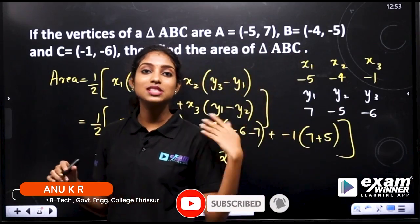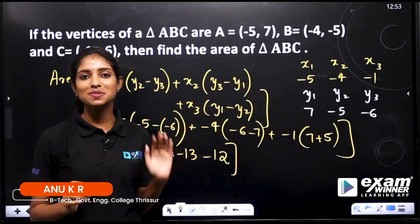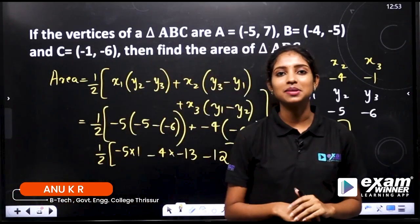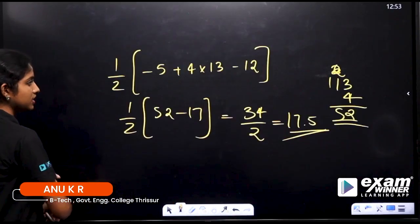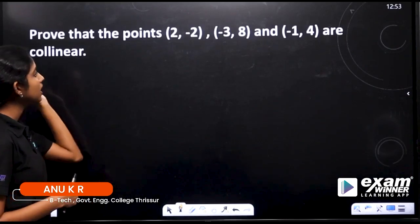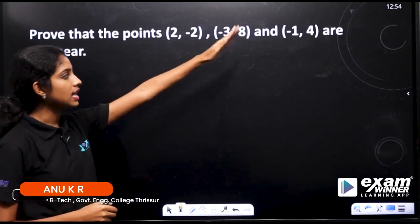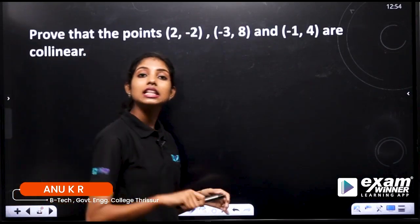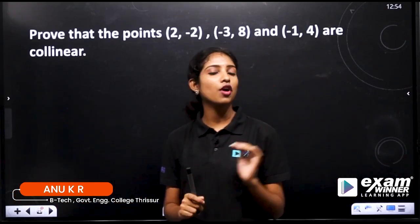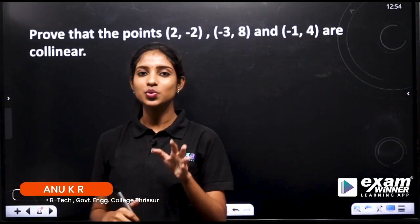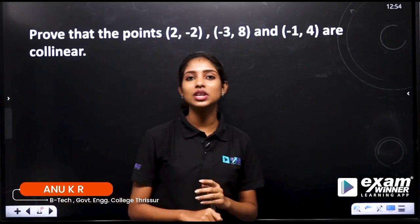Now we have a practice question. We have a simple triangle. Let's give you a question — the last question. Prove that the points (2, -1), (-3, -2), (8, 4), and (1, -4) are collinear. As I mentioned, if the points are collinear, the area of the triangle they form will be zero.